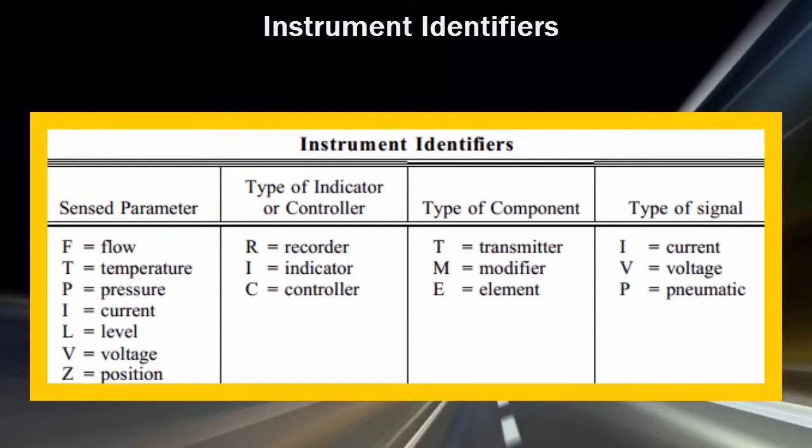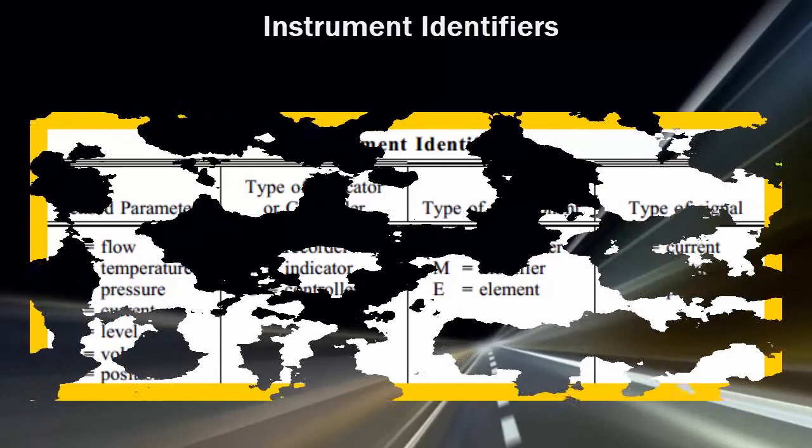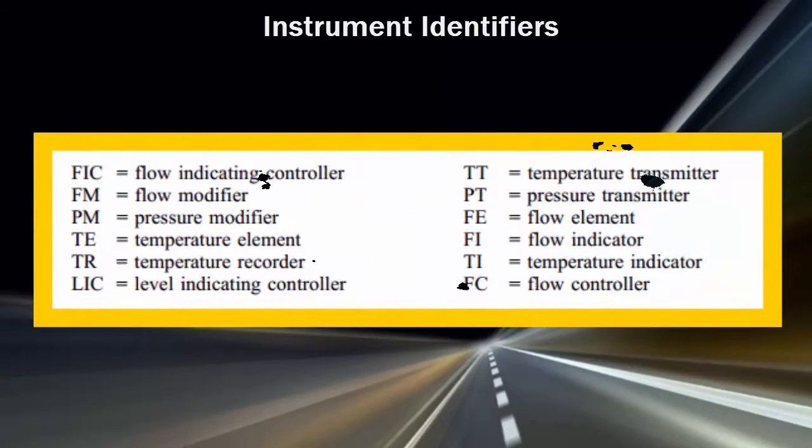The first three columns are combined so that the resulting instrument identifier indicates its sensed parameter, the function of the instrument, and the type of instrument. The fourth column is used only in the case of an instrument modifier and is used to indicate the types of signals being modified. Here is a list of example instrument modifiers.